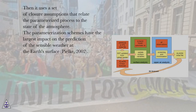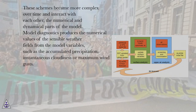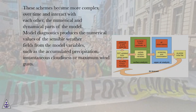It uses a set of closure assumptions that relate the parameterized process to the state of the atmosphere. The parameterization schemes have the largest impact on the prediction of sensible weather at the Earth's surface (Pelkey, 2002). These schemes became more complex over time and interact with each other and the numerical and dynamical parts of the model. Model diagnostics produces the numerical values of sensible weather fields from the model variables, such as accumulated precipitation, instantaneous cloudiness, or maximum wind gusts.